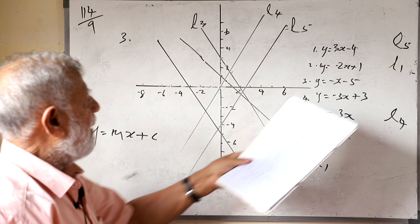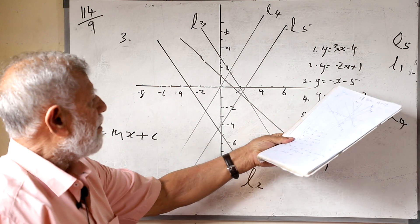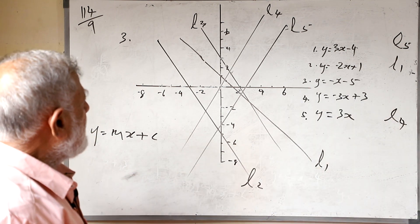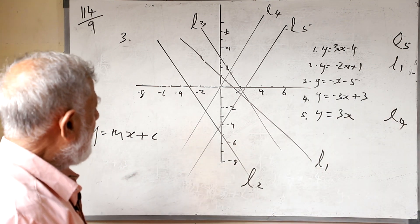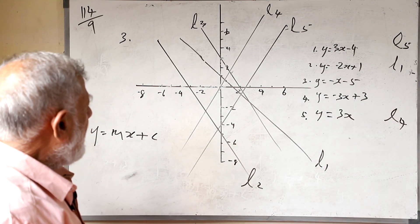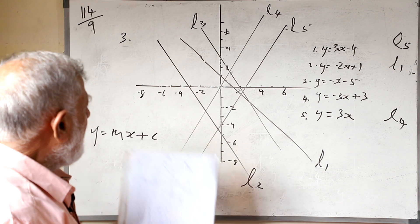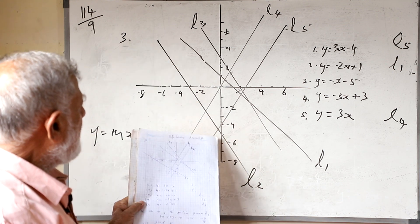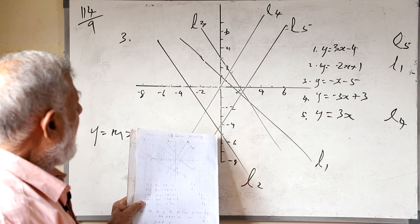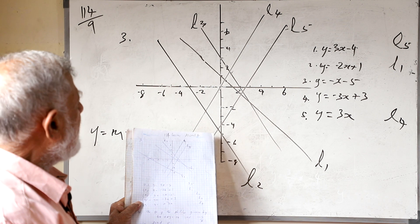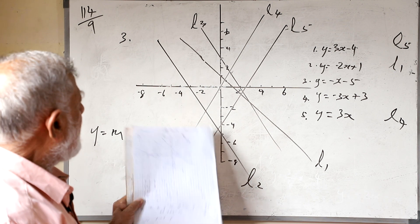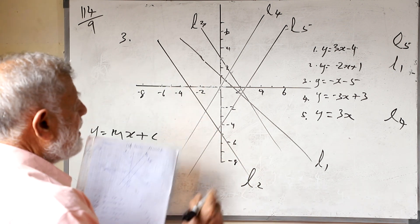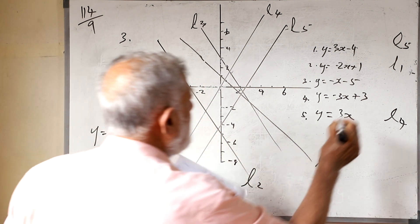Then when you look at this graph — minus 5 — it is going through minus 5 on the y-axis. Which is the line going through minus 5? It is this line, going through minus 5. And the gradient is also negative — obtuse angle — so this is equal to L2.